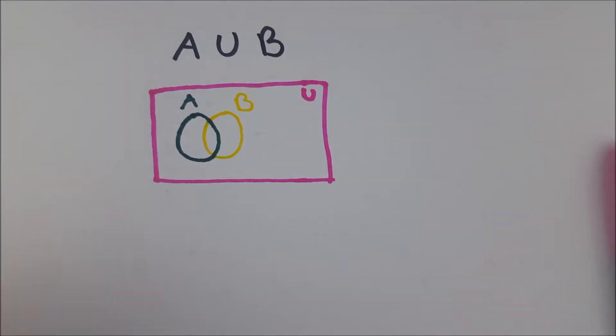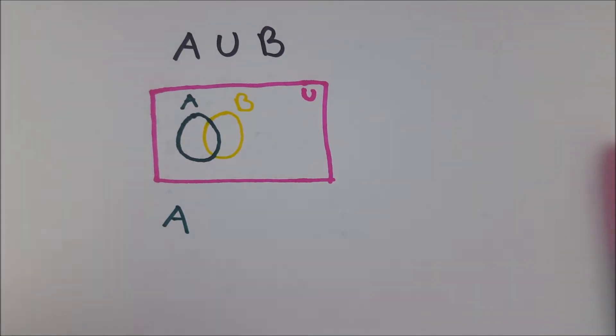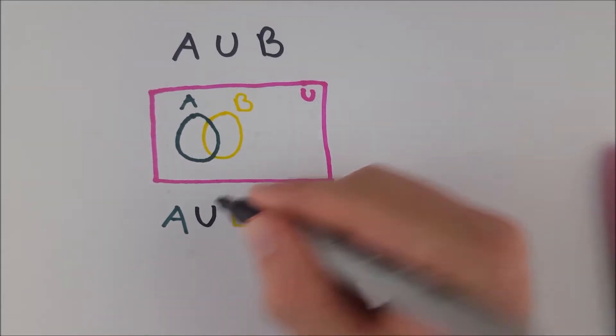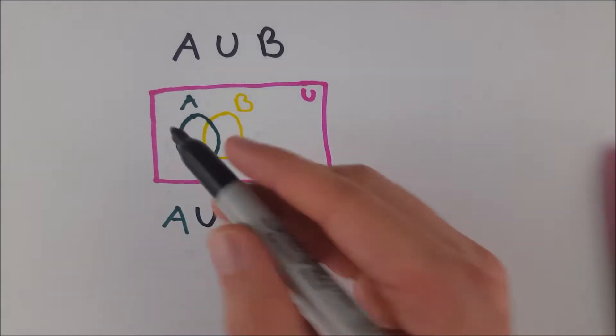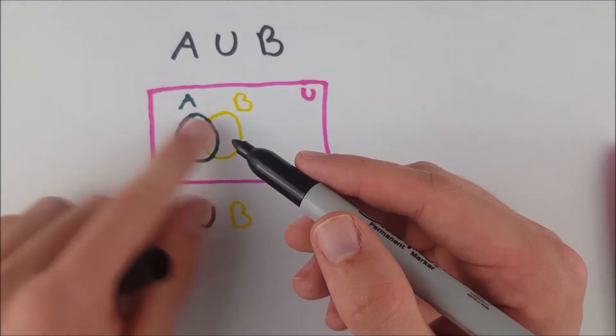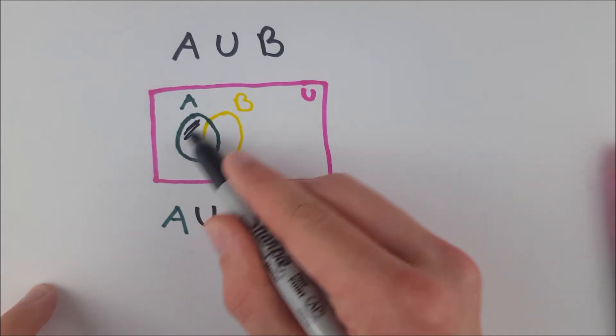So we want to look at the operation A union with B, and I'll write in that union with my black marker. So if we wanted to shade in all elements in A union B, what would that look like? I'll shade with the black marker. Well, like I said, if it's in A, then it goes into our set A union B. So that is all of this.